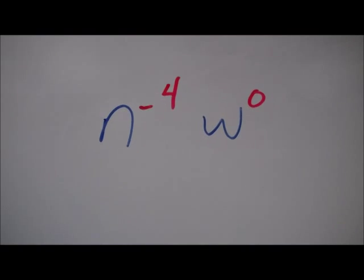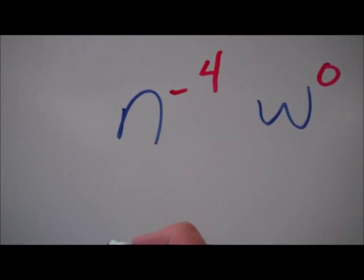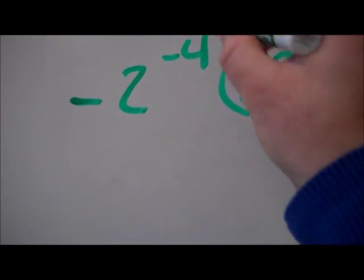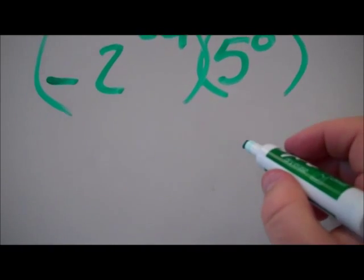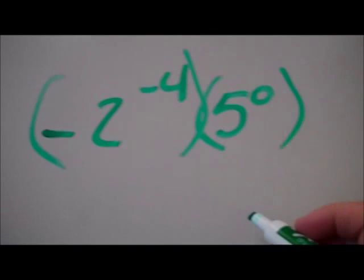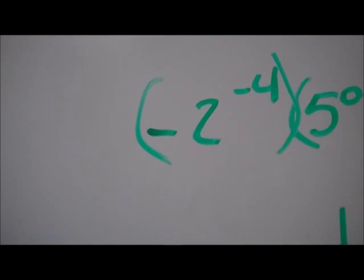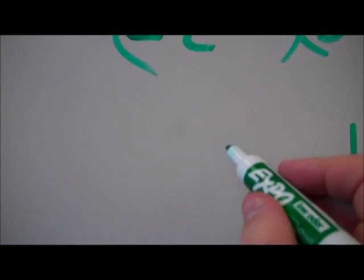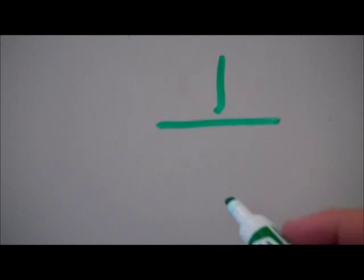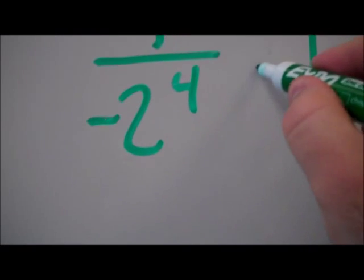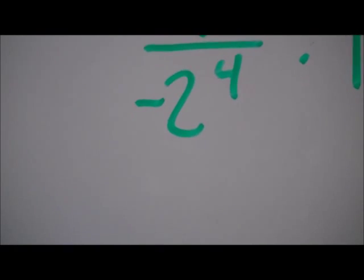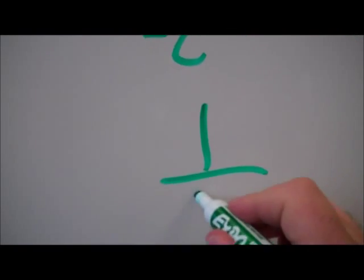Our next problem is n to the minus 4 times w to the zero power. We're going to substitute in our values: negative 2 to the negative 4 power times 5 to the zero power. 5 to the zero is 1. Negative 2 to the negative 4 — whenever I have a negative exponent, it's going to be 1 over, keep the base, keep the exponent: 1 over negative 2 to the fourth power. Negative 2 times negative 2 times negative 2 times negative 2 gives me 1 over 16.